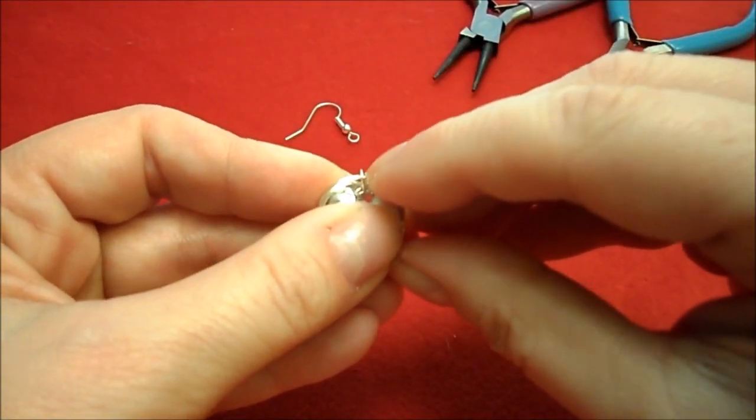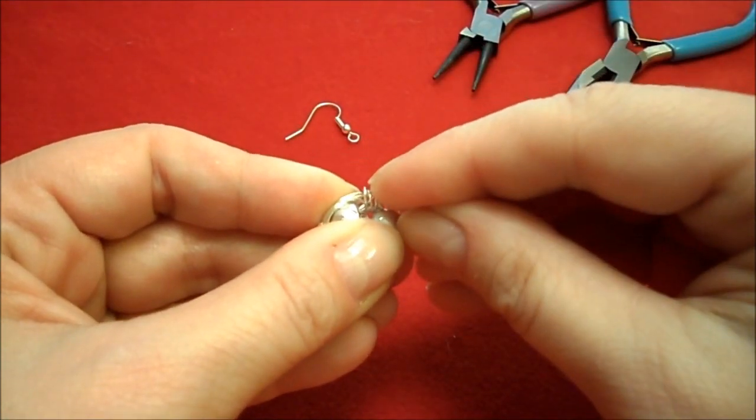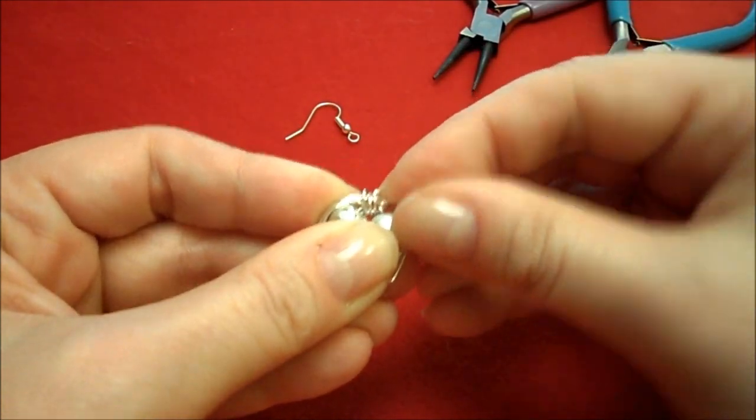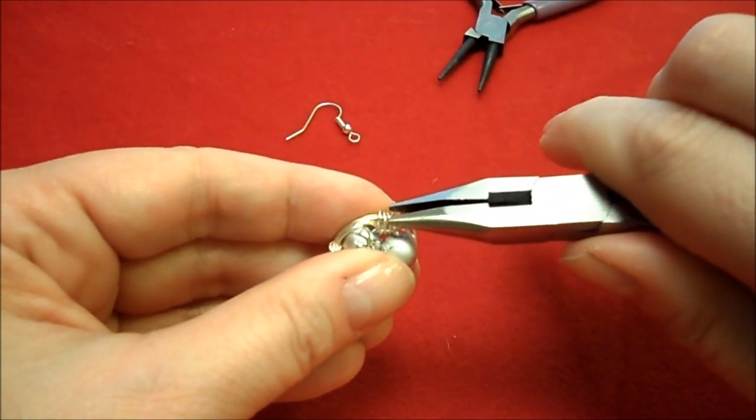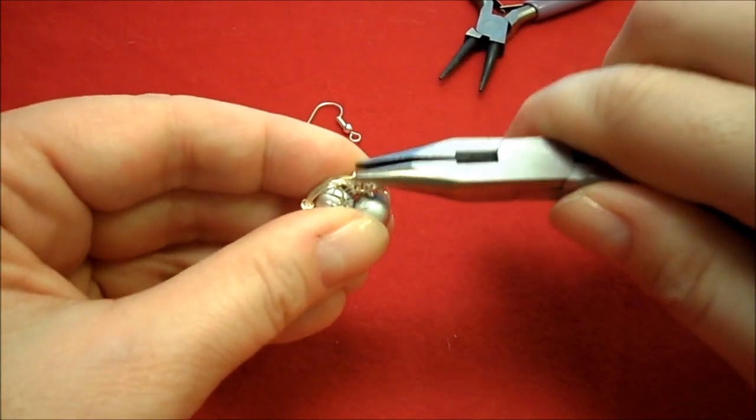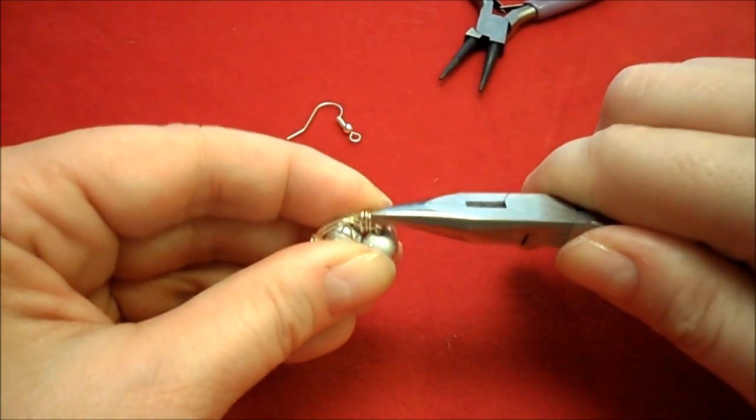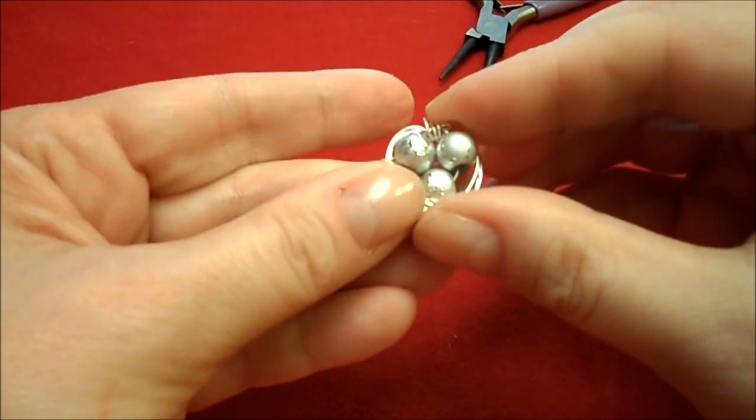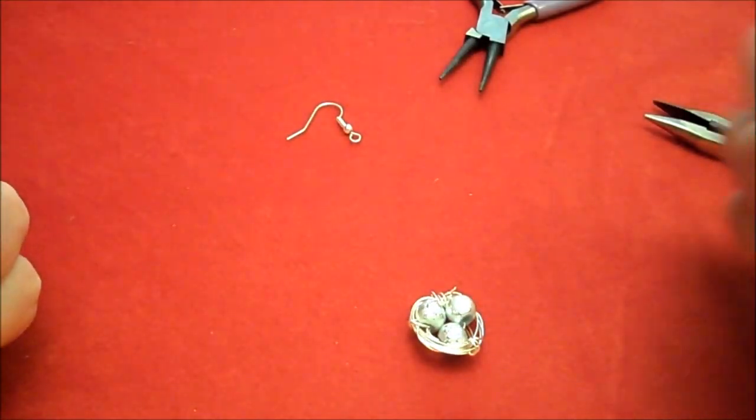And we're going to bend that down. You may need to use your flat nose pliers just to bend that down and get it out of the way. And there we have our little bird's nest.